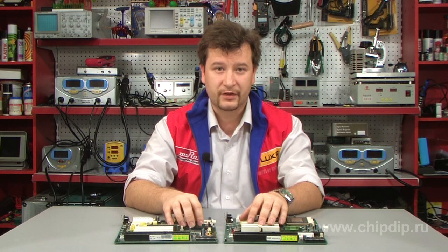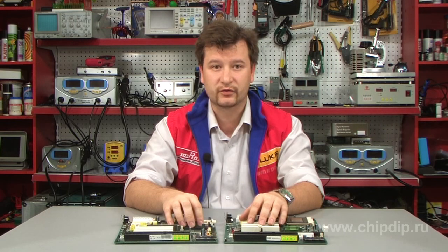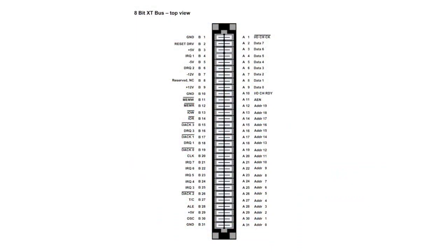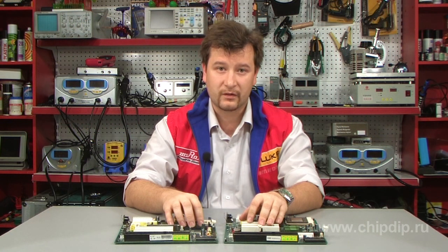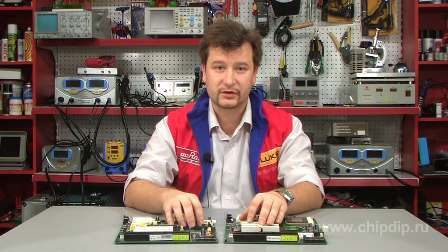ISA then developed into the 16-bit bus, sometimes called the AT bus, which first appeared in 1984. Its slots consist of two parts, one of which is a complete copy of the 8-bit slot. The additional part comprises 36 contacts, including 8 additional data lines, 4 addressing lines, 5 interrupt request lines, plus a contact for the new SBHE signal. All 8-bit buses can be set in the new bus slots, but the contrary way is impossible.